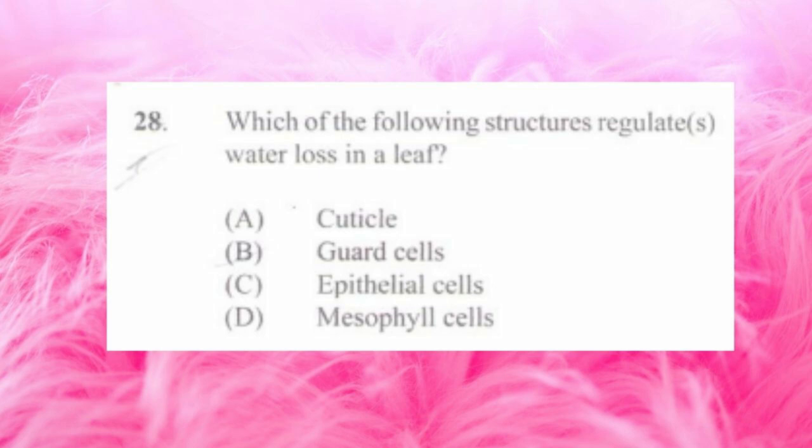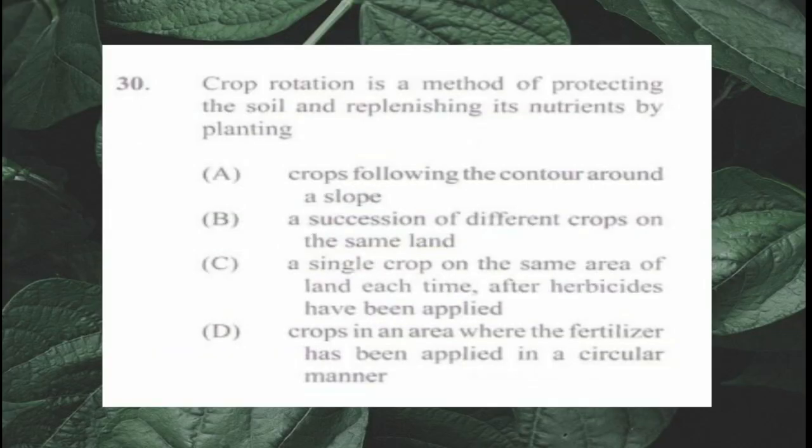Question number twenty-nine: the requirements for the manufacture of food in plants are a) oxygen, water, sunlight, soil, b) oxygen, water, sunlight, chlorophyll, c) carbon dioxide, water, sunlight, soil, d) carbon dioxide, water, sunlight, chlorophyll. The answer is d) carbon dioxide, water, sunlight, chlorophyll.